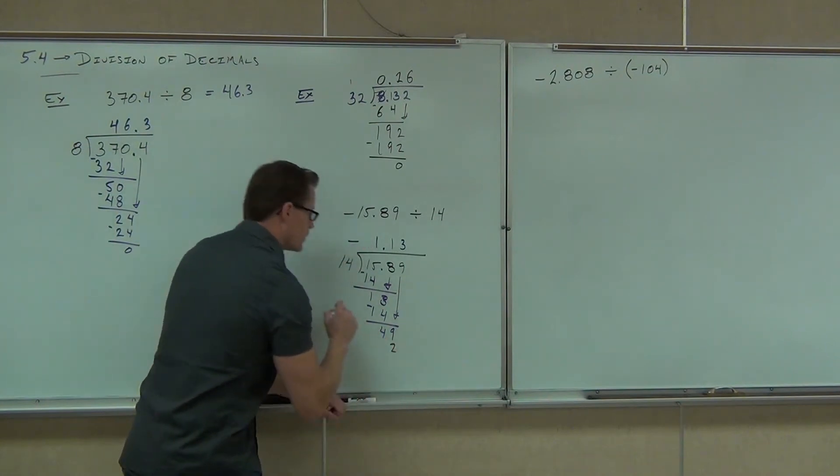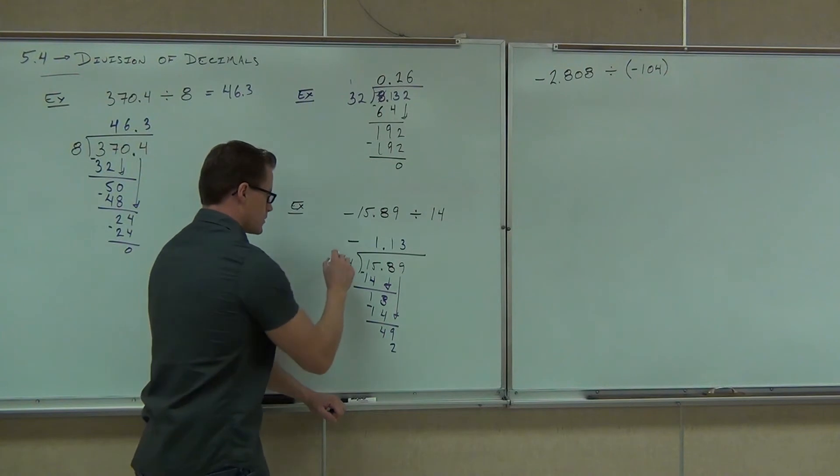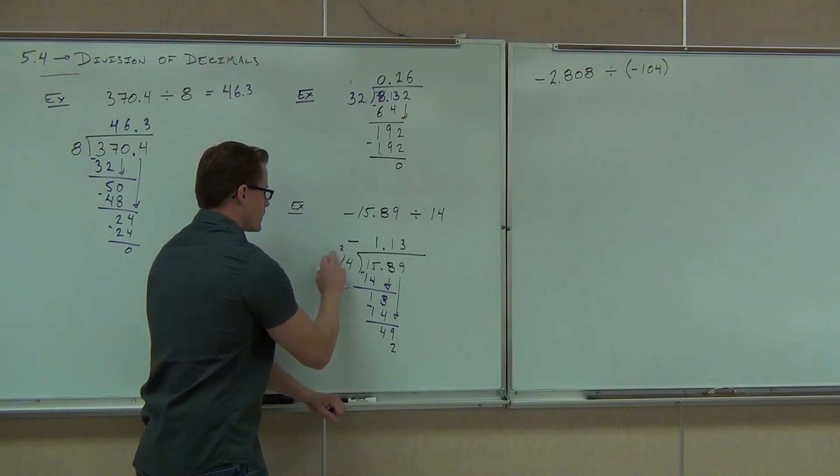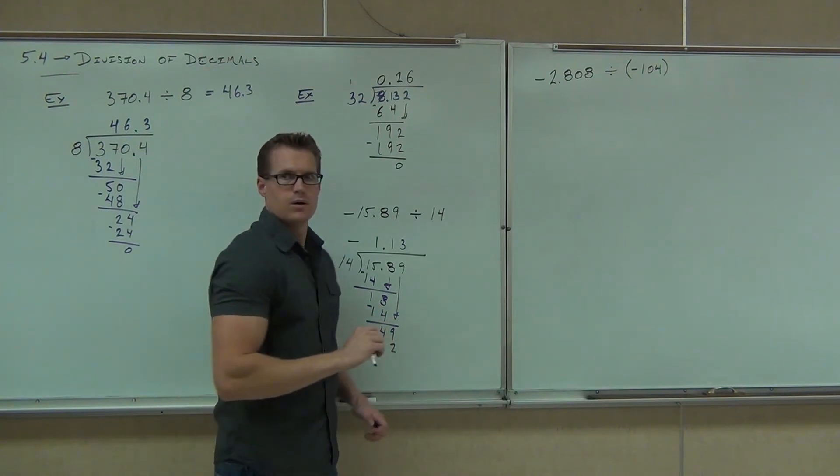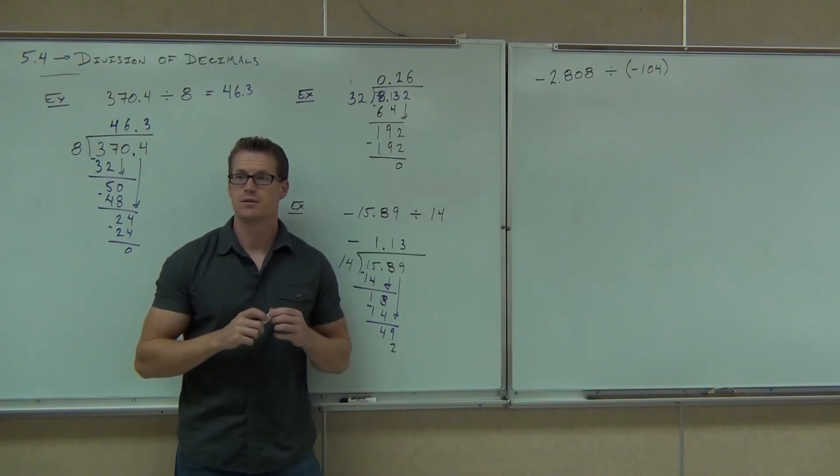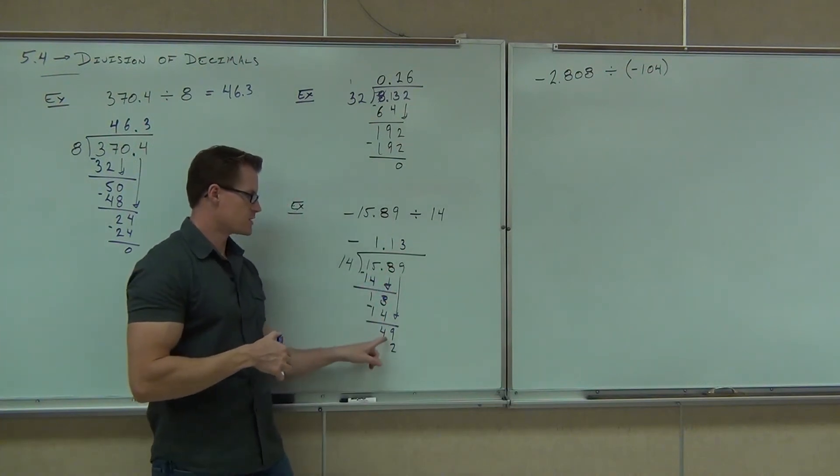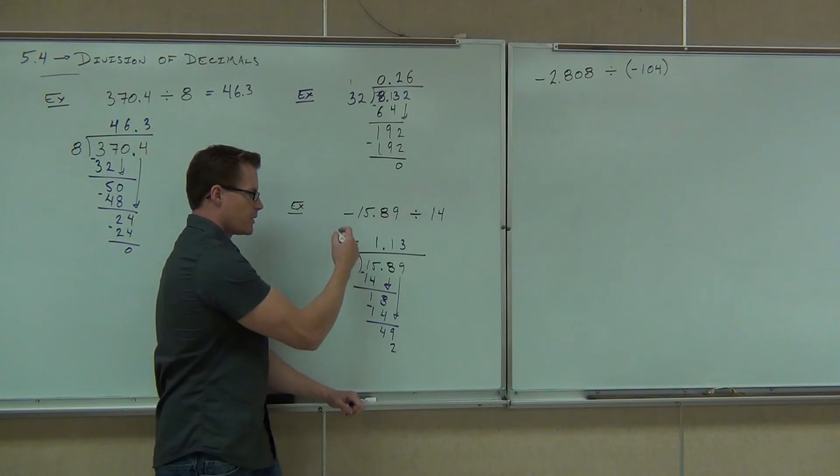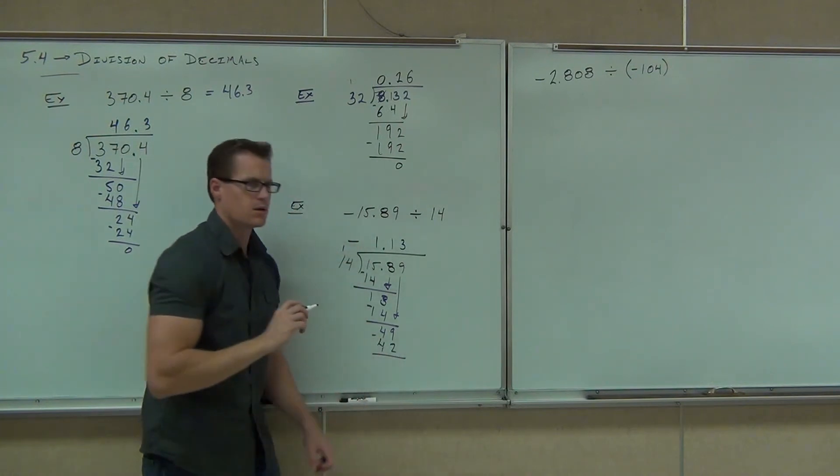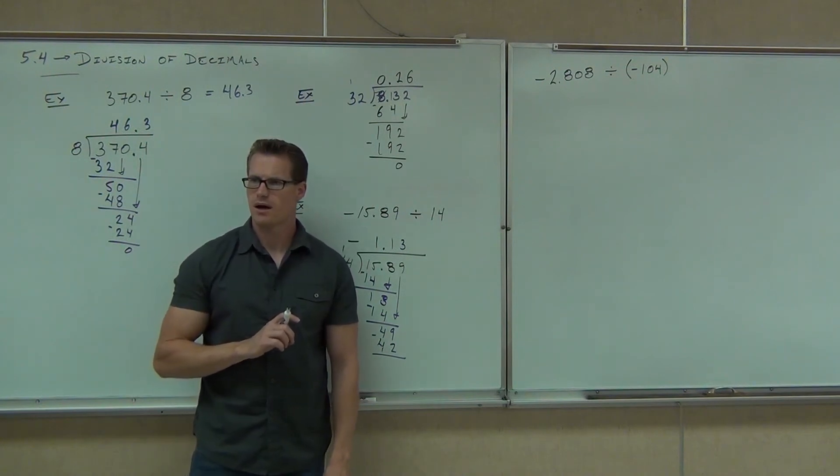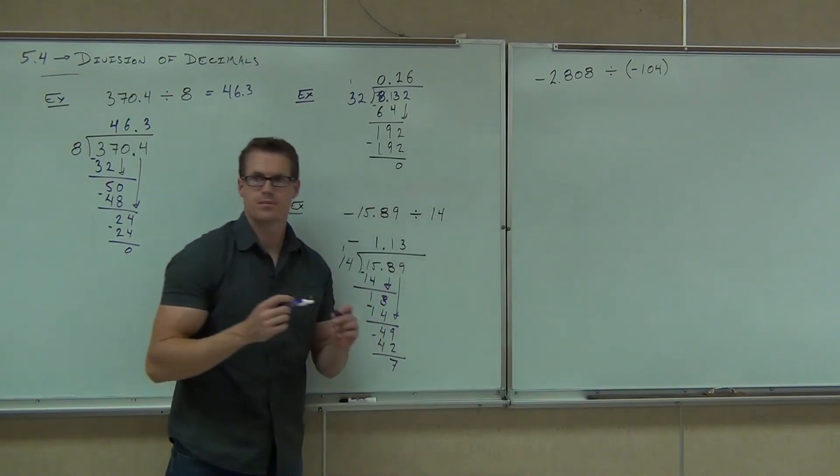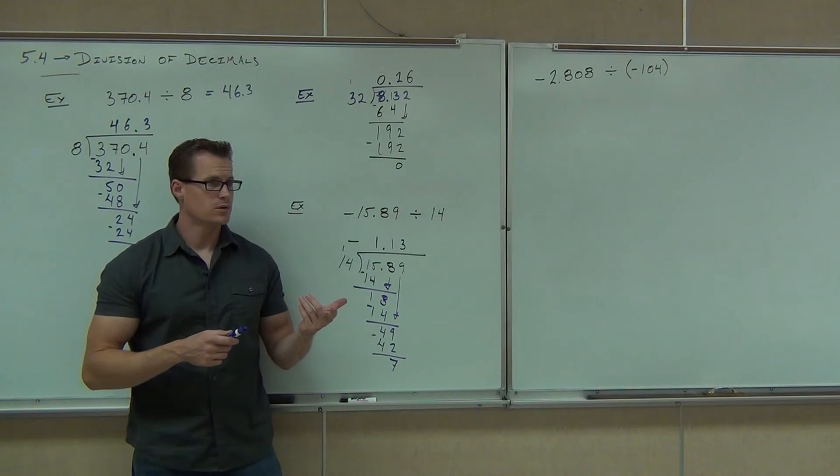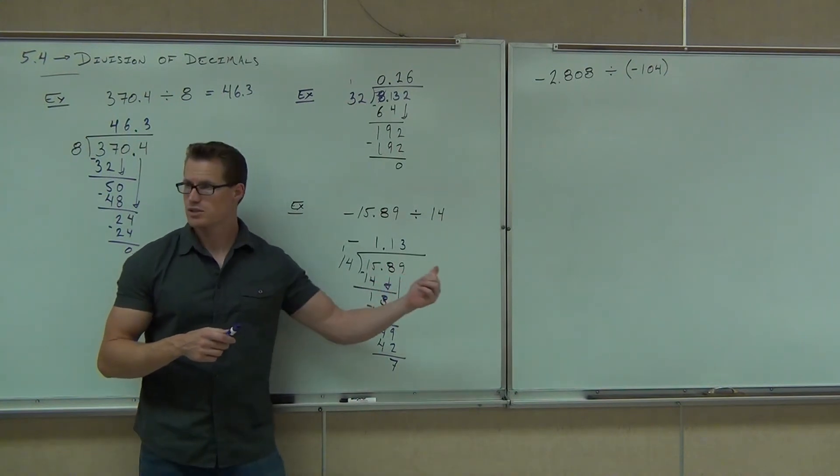We bring down the nine. Are you still okay so far? Yes. How many times does fourteen go into forty-nine? Three times. But wait a second. We have going into this number three times, yes? We multiply, we get twelve. We multiply, we add, we get forty-two. But wait a second. When I subtract, I get seven. Oh, there's a remainder of seven. But wait, we have a decimal place.